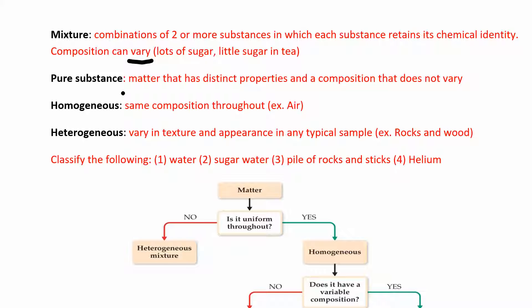A pure substance is any matter that has distinct properties and a composition that does not vary. Water is a pure substance — its composition is not going to vary. We also have homogeneous mixtures and heterogeneous mixtures. Homogeneous means the composition is the same throughout.